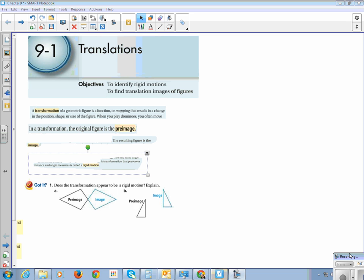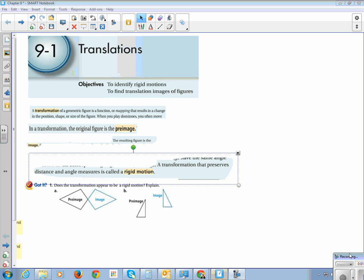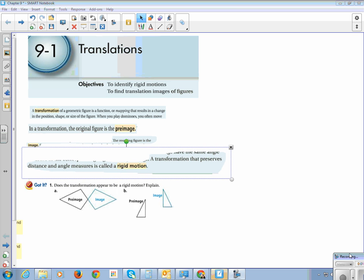A transformation that preserves distance and angle measures is called a rigid motion. I like that, the fact that it doesn't change size, it's rigid.